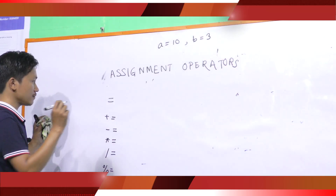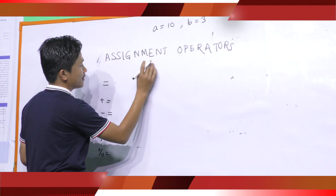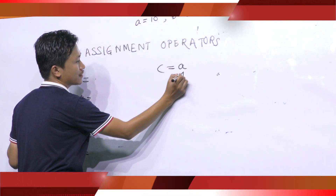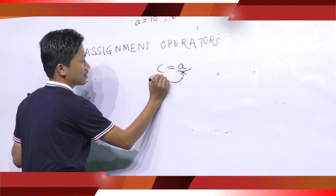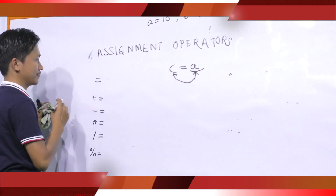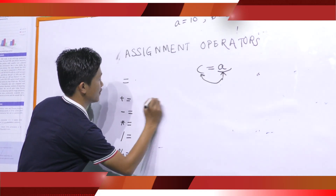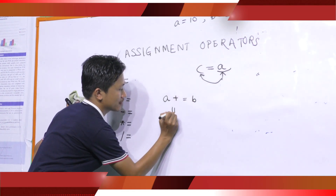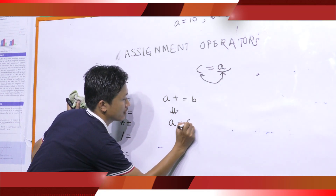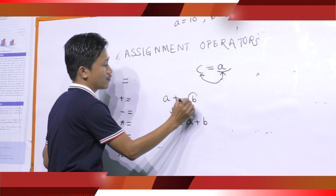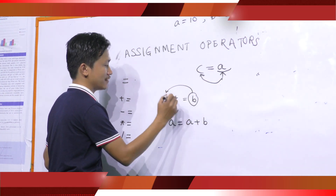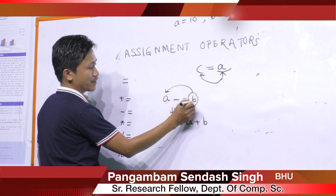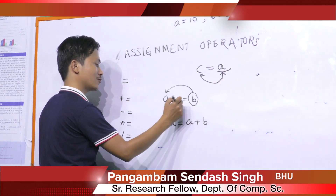Next is assignment operators. The first one is the assignment operator, which takes the form C = A — it assigns the value stored in the right operand to the left operand C. The second form is the compound assignment: A += B is equivalent to A = A + B, meaning add the value of B to A and then assign the result to A. Similarly, if it were minus, you subtract B from A and assign the result to A.